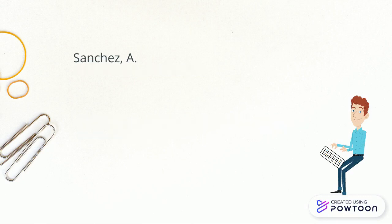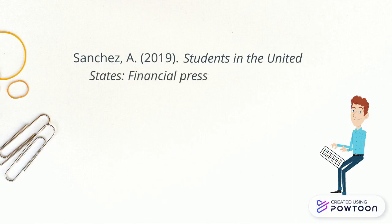After the authors, add the publication year in parentheses and then place a period. Add the title of the book in italics and then a period. Capitalize only the first word of the book, any proper nouns, and the first word after a colon. If you ever use the citation suggested by databases, this is one thing you always want to be sure to double-check.